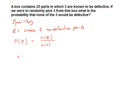So the number of E here is a combination problem where we're choosing three non-defective, and we need to determine how many non-defectives we have. There's 25 parts in the box, three are defective, so we know that there's 22 that satisfy this condition. So the number in E is going to be 22 choose 3.